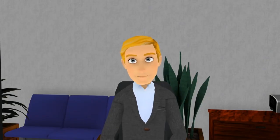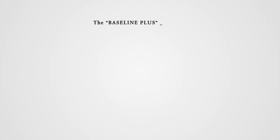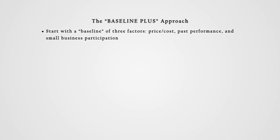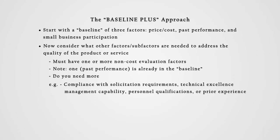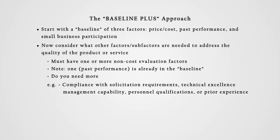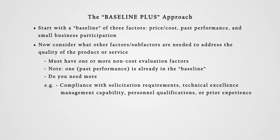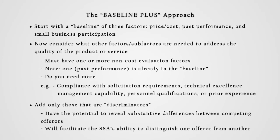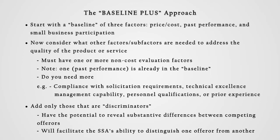Since we have all these mandatory subject matter areas that we have to evaluate, do you have any suggestions for how to get a team started with selecting its evaluation factors? Yes. I like to use a logical thought process I call the baseline plus approach. Start with a baseline of three required factors: price or cost, past performance, and small business participation. Then consider what you may need to evaluate to adequately address the quality of the product or service. Remember, as stated in the FAR language we have already looked at, past performance is one of the ways to address quality. Since past performance is already in the baseline, that baseline actually addresses all the required subject matter areas of evaluation. So you can stop there, or you only need to add those additional subject matter areas that will truly serve as discriminators with respect to the particular product or service being purchased. That's the plus in the approach.